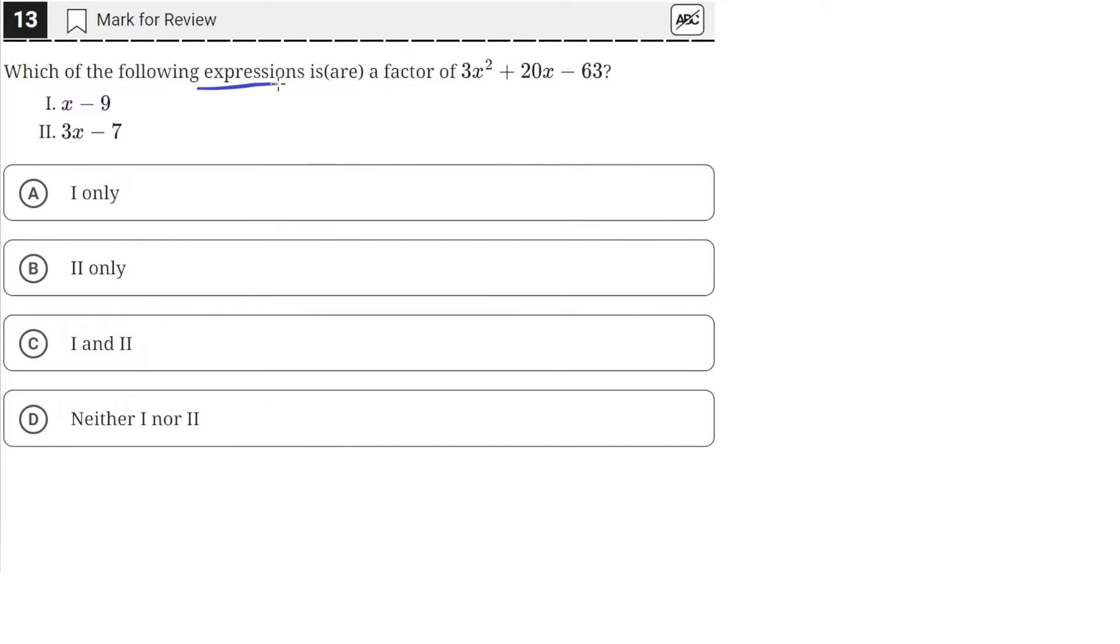Which of the following expressions is a factor of 3x squared plus 20x minus 63? These are the two options. So we need to factor this quadratic right here and see whether either of these or both are its options, are its factors.